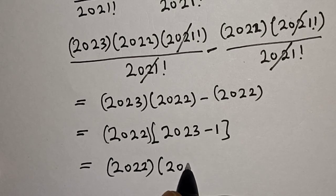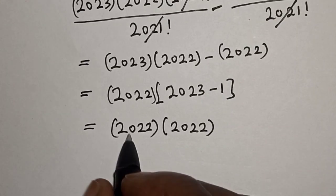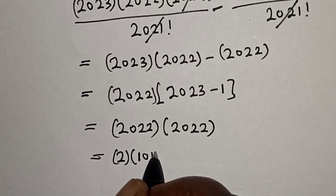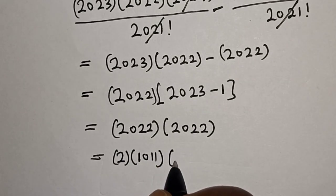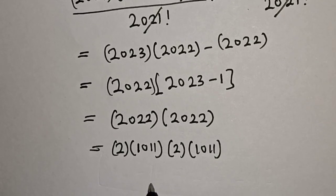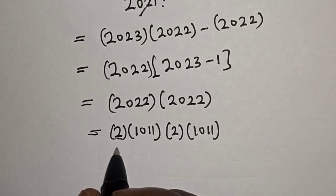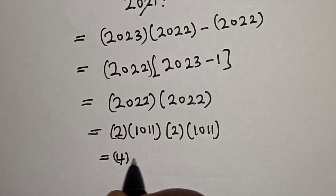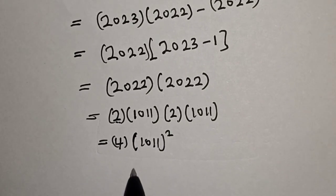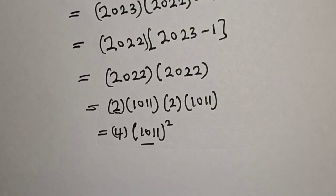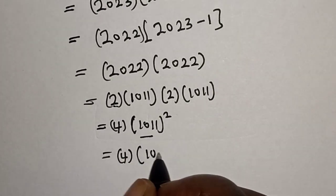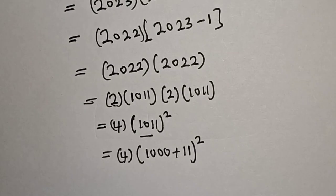So we have 2022 squared. Let's transform this: 2022 can be written as 2 multiplied by 1011. So 2022 squared is 2 times 2 times 1011 squared, which equals 4 times 1011 squared. Now let's transform 1011 as 1000 plus 11, so we have 4 into (1000 plus 11) squared.